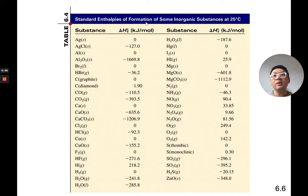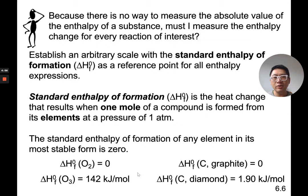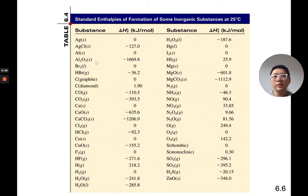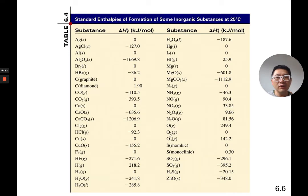Table 6-4 is the standard enthalpy, also known as heat of formation, of some inorganic substances. Notice all the zeros here. What do we know about zeros? They're an element in its most stable form. So, we notice zeros for silver, aluminum, bromine, carbon as graphite, calcium, chlorine, copper — elements in their most stable form. Based on that, you see O, O2, and O3 listed. Since the zero corresponds to the most stable form, obviously O2 is the most stable form of oxygen.